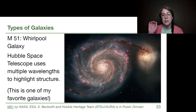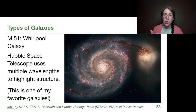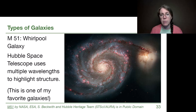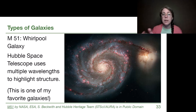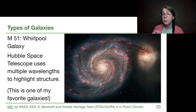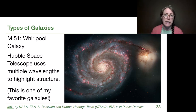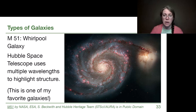The Hubble image has multiple wavelengths added together to enhance structure and color, no light pollution issues, no atmospheric seeing or resolution limit, and a much longer exposure time. This is a classic spiral galaxy — specifically an unbarred spiral galaxy. That central region is circular, it has a secondary galaxy that it's interacting with, but the main galaxy is a very classic unbarred spiral.